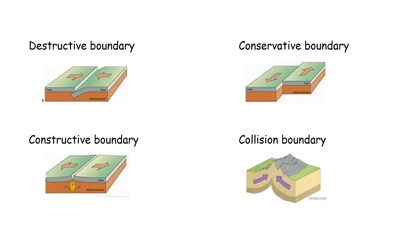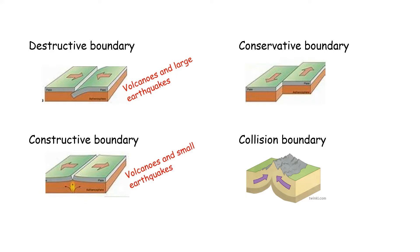The plates can do four different things at their edges. We call it a destructive boundary if one plate sinks underneath another. It's a conservative boundary if two plates slide past each other. It's a constructive boundary if two plates move away from each other, and a collision boundary if two plates hit each other and are both forced upwards. Destructive boundaries produce volcanoes and large earthquakes; constructive boundaries produce volcanoes and smaller earthquakes; conservative and collision boundaries produce large earthquakes.